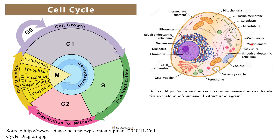In cells, a centrosome is present which forms spindle fibers. The chromosomes can divide the same way when the centrosome is present. So cells in G0 phase, like neurons, will not proceed further to S phase. G0 phase is like a quiescent phase.